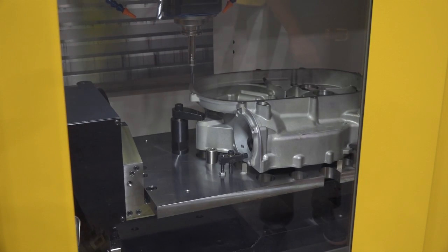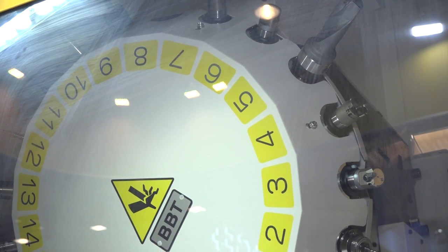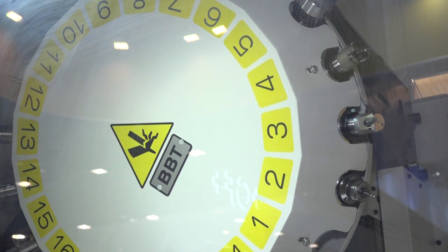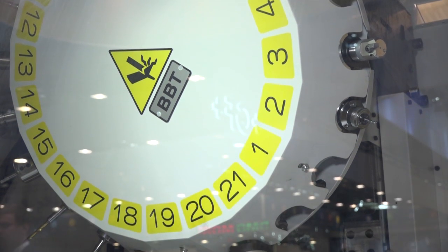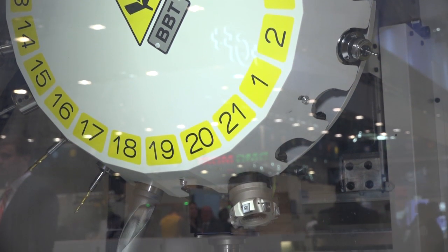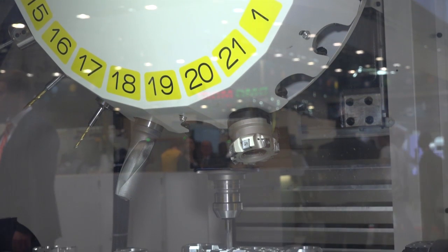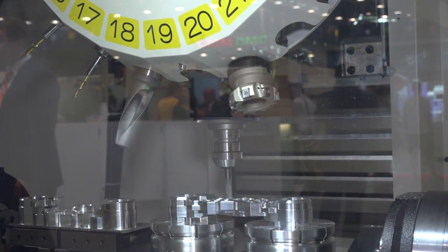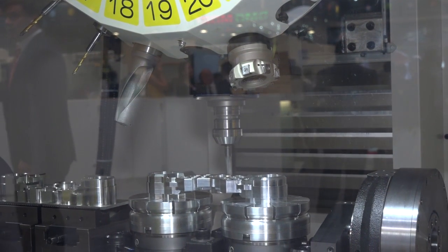They've also got an extra servo motor which has been installed to improve the turret indexing time so you can reduce tool change time from 0.7 seconds down to 0.2 seconds faster than the standard version. So this will help you for faster cycle times and increased productivity.